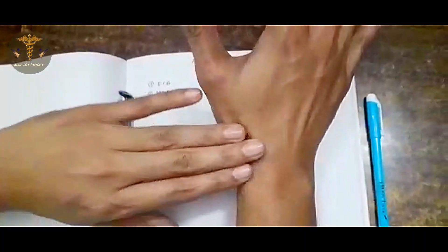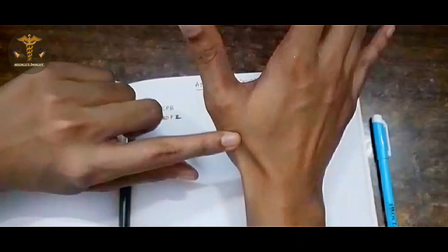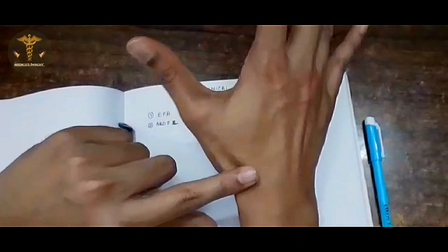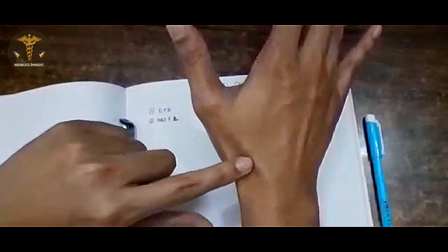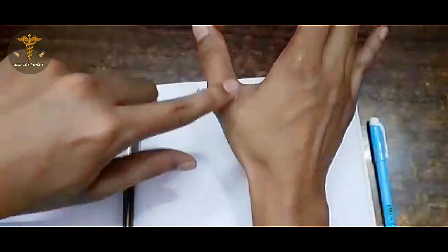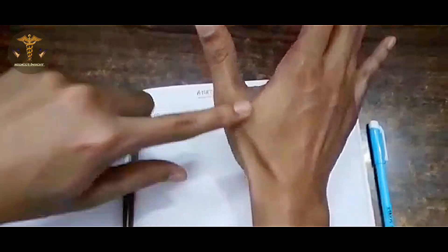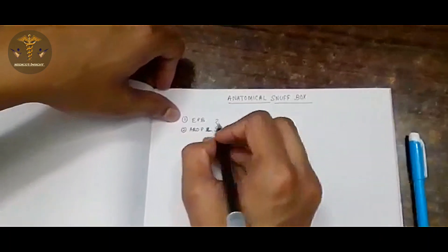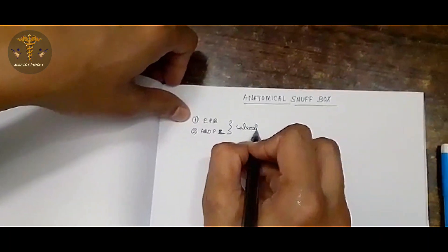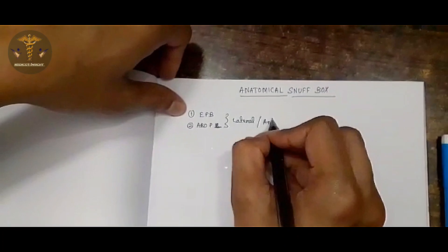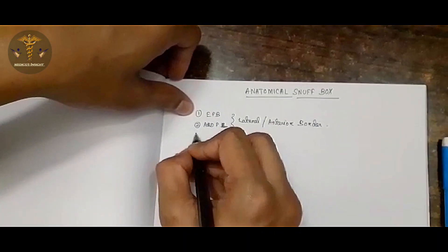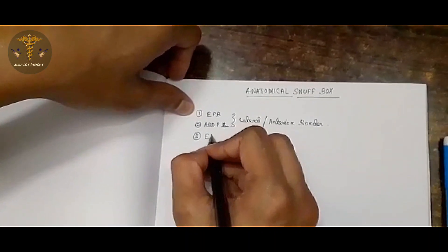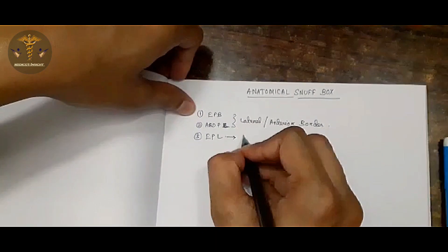All are present on the extensor surface. Another tendon is known as extensor pollicis brevis, and this tendon is known as extensor pollicis longus, which forms basically the medial border or the posterior border of the anatomical snuff box. The lateral or anterior border is formed by abductor pollicis longus and extensor pollicis brevis, and the medial or posterior border is formed by extensor pollicis longus.